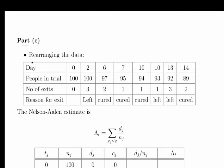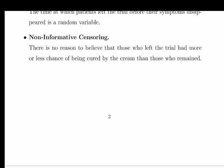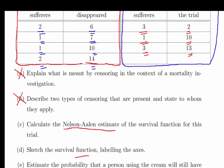So calculate the Nelson-Aalen estimate of the survival function for this trial. Let's go down here to part C. Essentially what we are going to do here is just sort of rework the information that we were given. We had 100 people on day 0. And we had people either leaving or cured. So in day 2, we had 3 people leaving. On day 6, we had 2 people who felt their symptoms were better and they were essentially cured. Likewise day 7, another person cured.